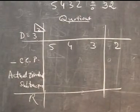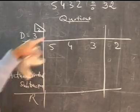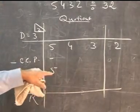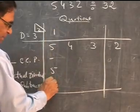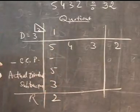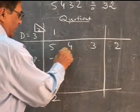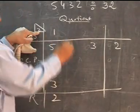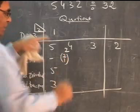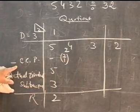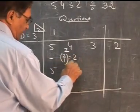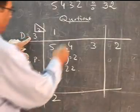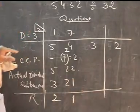There is nothing here at the start, so there is no crisscross product. So 5 itself is the actual dividend. Then 5 divided by 3: quotient is 1, remainder is 2. We put 2 here. Now the flag is 2 and the quotient is 1 - so the crisscross product is 2 times 1, which equals 2. That gives us 22 as the next actual dividend. We divide 22 by 3: quotient is 7, remainder is 1.